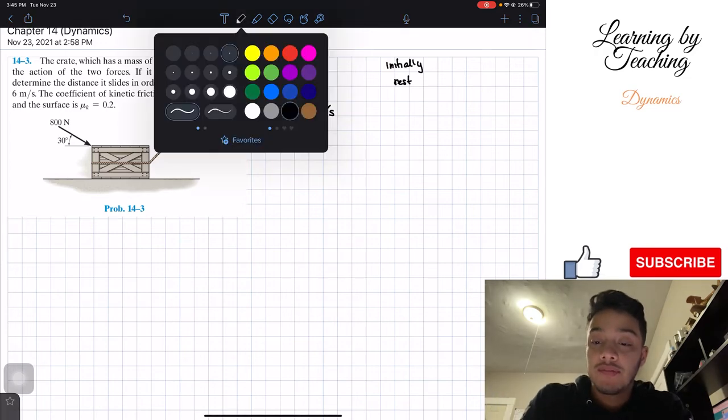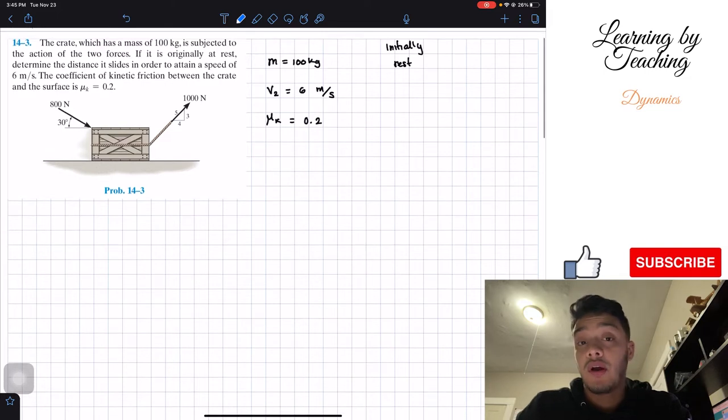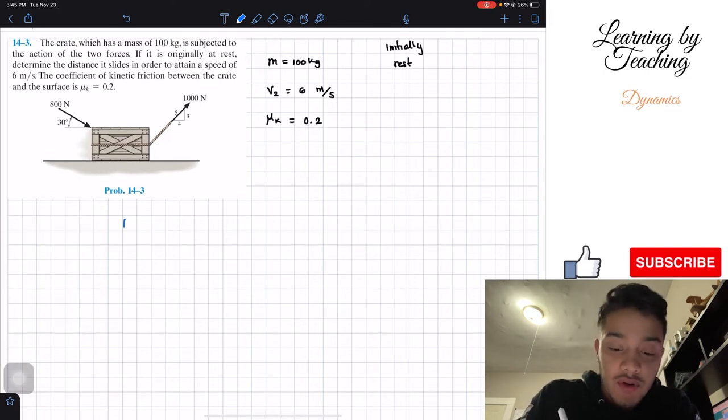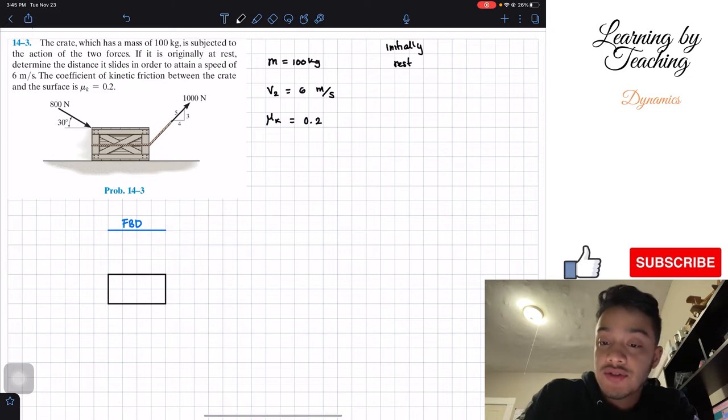So now we've wrote our givens. The next thing I like to do is to draw a free body diagram. So free body diagram, so that way we can perceive our problem entirely.